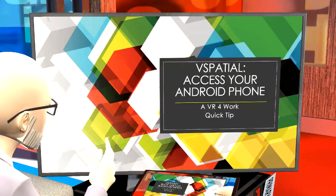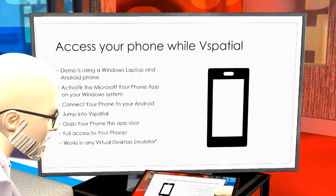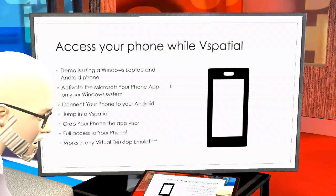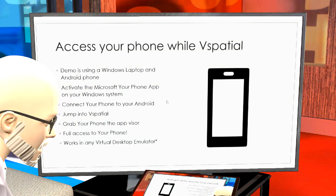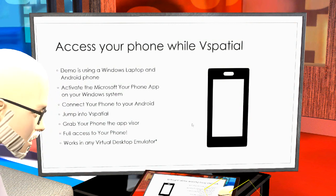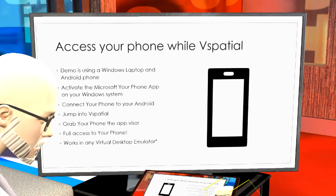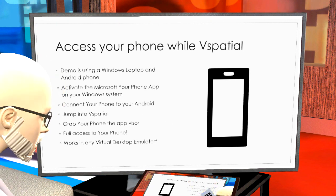My demo is using my Windows laptop and my Android phone. Microsoft has created an application you can install from the Google Play Store on your Android phone called Your Phone. Your Phone connects to a Your Phone app in the Windows system, and it shares information from your phone directly to your computer desktop so that you can respond to text messages, get notifications, and actually see your phone screen and manipulate it all from your Windows desktop. And if you can do it on your Windows desktop and you're using a Windows emulator within VR like vSpatial, you're going to be able to access your phone too.